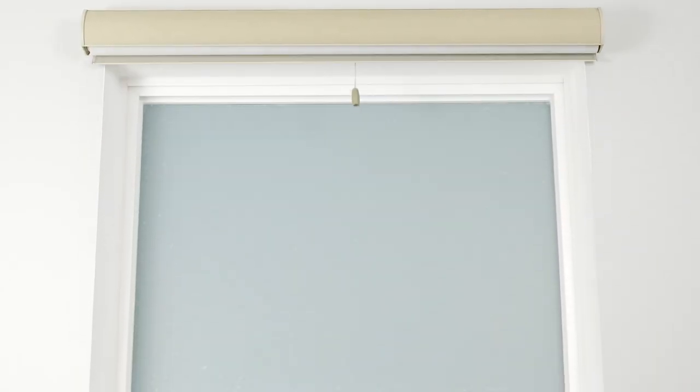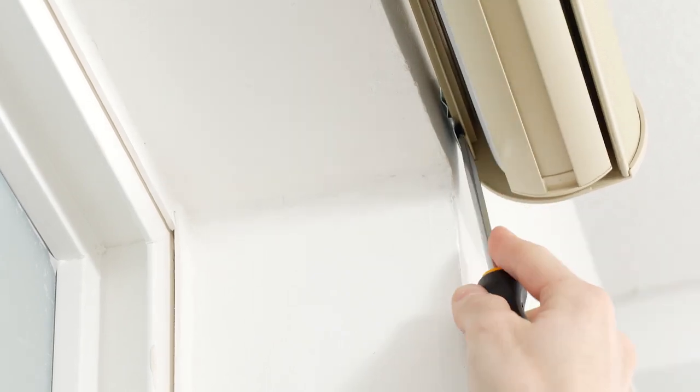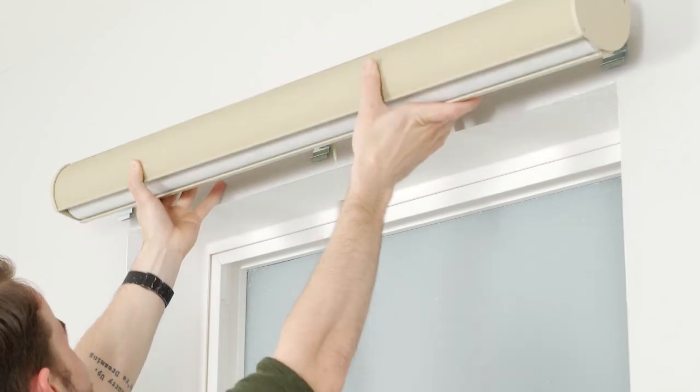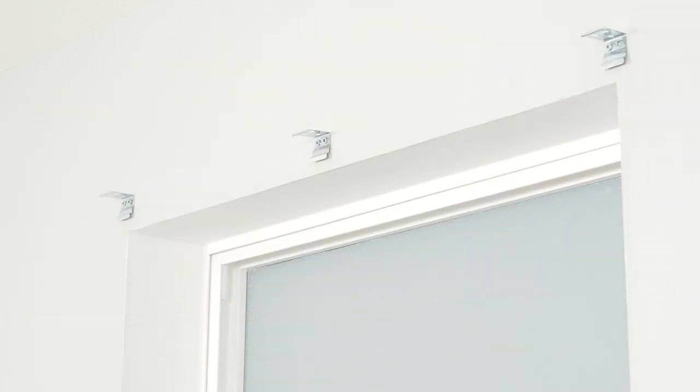If you need to remove your shade, raise it fully into the cassette first. Reach up under it and press on the back of the bracket, which acts as a release tab. Lift the cassette off the brackets and out of the window.